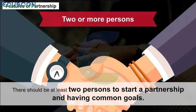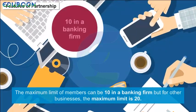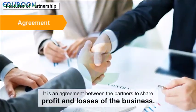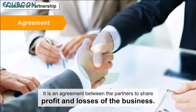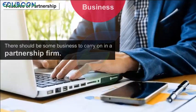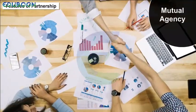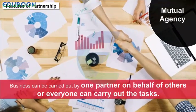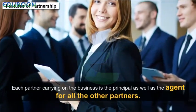Features of Partnership. The essential features of a partnership firm are: Two or more persons — there should be at least two persons to start a partnership having common goals; the maximum limit of members can be 10 in a banking firm, but for other businesses the maximum limit is 20. Agreement — it is an agreement between the partners to share profit and losses of the business; this agreement can be written or oral. Business — there should be some business to carry on; co-ownership of property alone does not mean partnership. Mutual agency — business can be carried out by one partner on behalf of others, or everyone can carry out the task; each partner is the principal as well as the agent for all other partners.